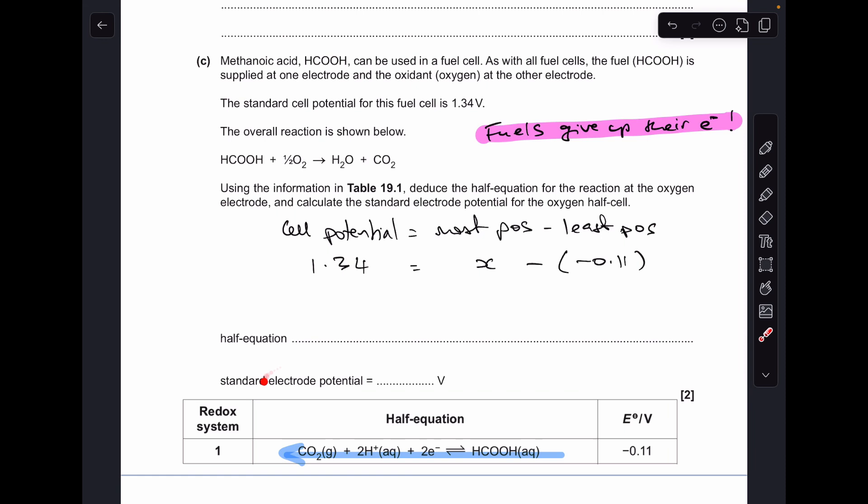So if we deal with this answer first, the standard electrode potential for the oxygen half cell. The cell potential of the fuel cell in this case is the most positive electrode potential, minus the least. So that 1.34 volts is going to equal this unknown electrode potential for the oxygen half cell, minus the fuel. So rearranging that gives us this, so X equals 1.23 volts.